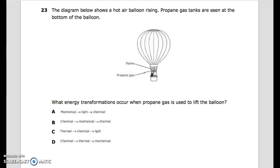Question 23: The diagram below shows a hot air balloon rising. Propane gas tanks are seen at the bottom of the balloon. Here's the flame and the propane gas. What energy transformations occur when propane gas is used to lift the balloon? A. Mechanical to light to chemical. B. Chemical to mechanical to thermal. C. Thermal to chemical to light. D. Chemical to thermal to mechanical.